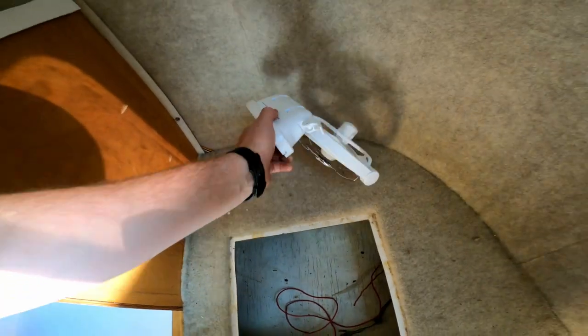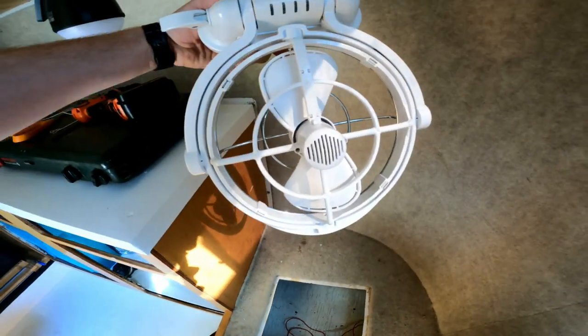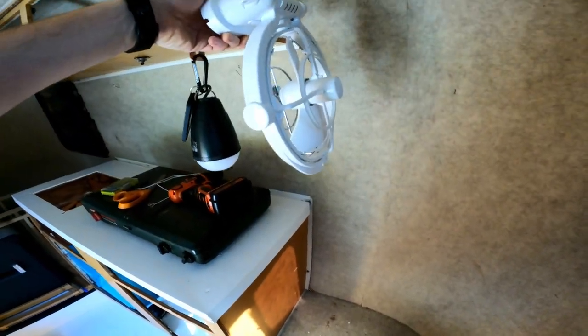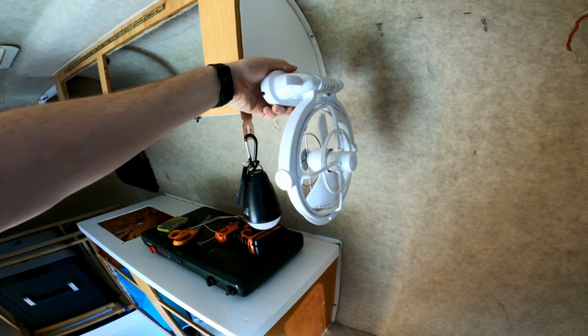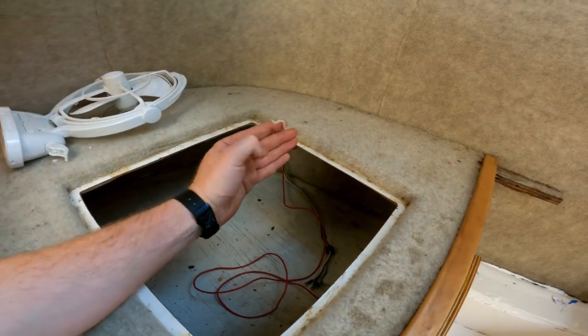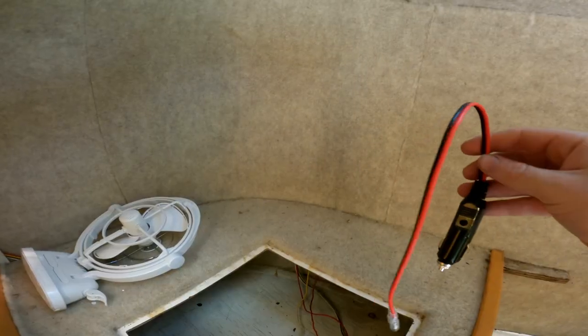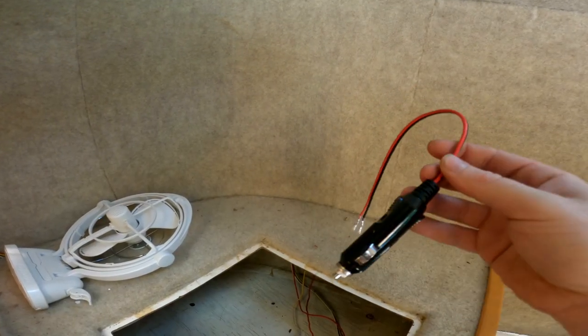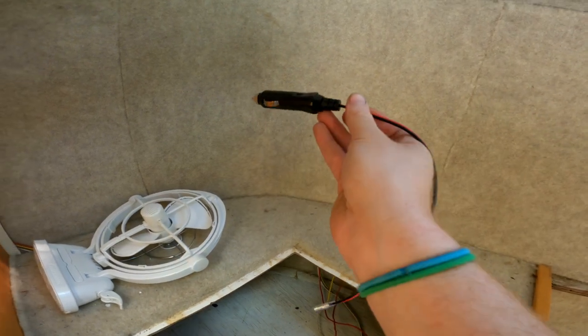So this is the fan. It's the Sirocco Air 2 and these are pretty much the best in the market. I'm planning on mounting it about right here. I have these wires already installed so I'll be able to hook it into those wires. Those wires actually come down through here and end up right here. I'm going to connect this 12 volt adapter to those wires so I can plug it into the Jackery.